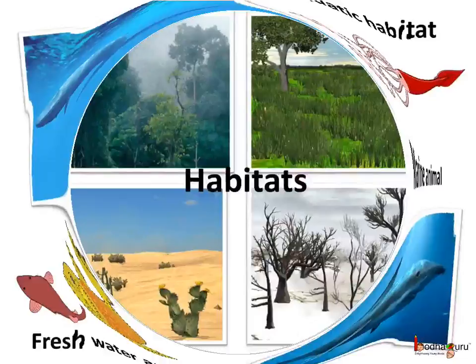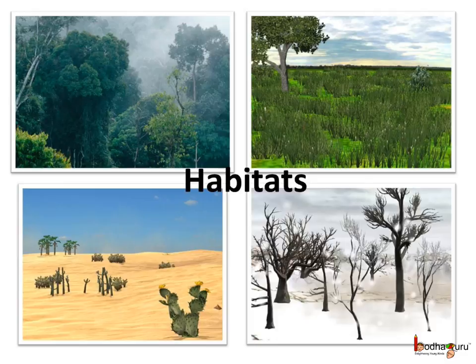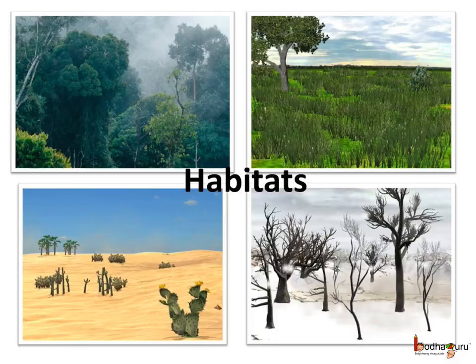There are many kinds of terrestrial habitats, for example, the forests, the grasslands, the cold snowy hilly regions, extremely hot and dry deserts etc. And the animals living in the different habitats overcome the hardships of their habitat in different ways. So let us see the different types of forests.